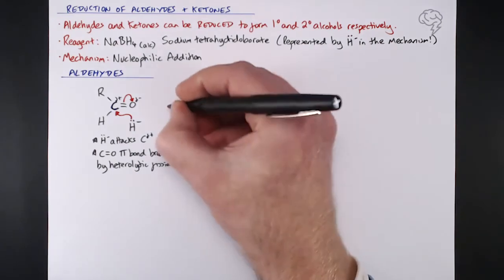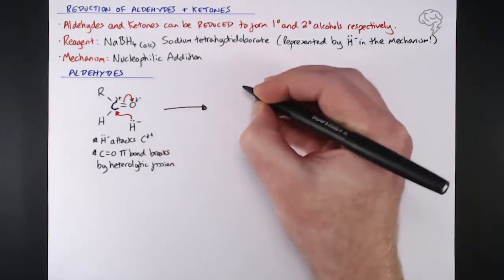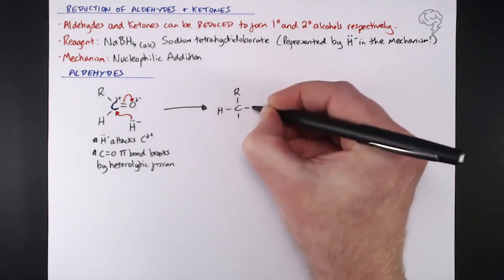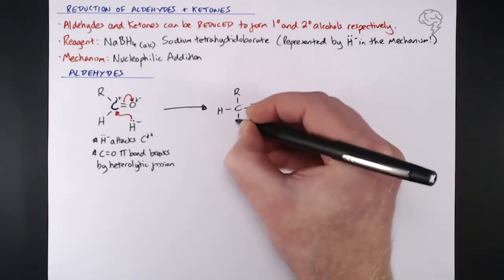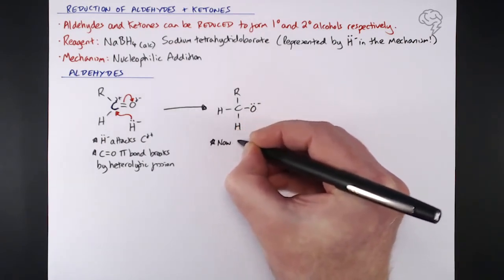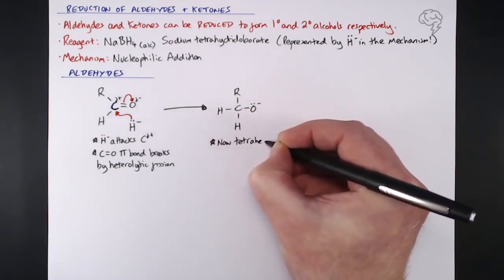We end up with a tetrahedral intermediate where our R group doesn't change, the hydrogen that was originally there stays there, we now have another hydrogen bonded to that carbon from the H minus, and that fully negative oxygen because it's now got a lone pair from the bond it did have with the carbon.